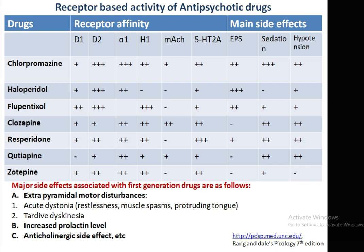Risperidone mainly acts on D2, alpha-1, and H1 receptors, and is predominantly active on 5-HT2A receptors. It has less EPS side effects along with sedation and hypotension. Quetiapine acts specially on alpha-1, H1, muscarinic, and 5-HT2A receptors — its main advantage is having no EPS side effects, with only sedation and hypotension observed. Zotapine, a newer drug, has affinity towards D1, higher affinity towards D2, alpha-1, H1, and 5-HT2A receptors, with less or no EPS side effects, no hypotension, and only sedation as the main side effect.